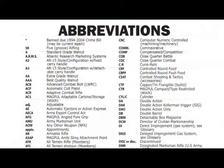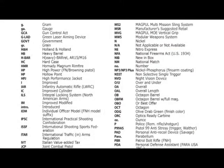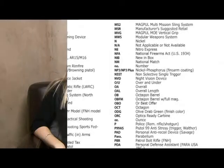Several abbreviations are used in the Blue Book of Gun Values in order to save space. A listing of these abbreviations can be found in the back of the book. Most of these abbreviations are used within model descriptions.